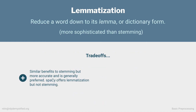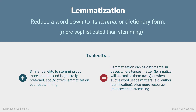Lemmatization offers similar benefits to stemming, but in general is more accurate and is preferred. Some libraries, such as spaCy, offer only lemmatization. On the downside, lemmatization can trip us up where tenses matter, as it will normalize them away. It can also cause problems when subtle word usage matters — for example, when we want to identify an author through their work. Lemmatization also requires more resources like dictionaries for word lookups and identifying parts of speech.